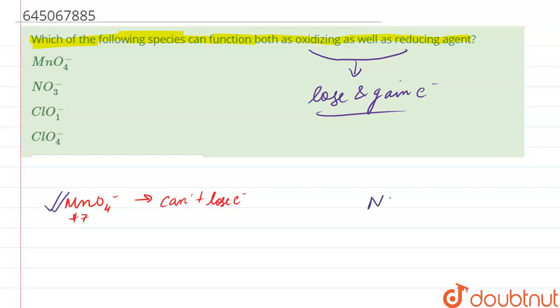Similarly in case of NO3- we have N at plus 5 state. In plus 5 state it also can't lose electron. Hence it also can't act as both oxidizing and reducing agent.